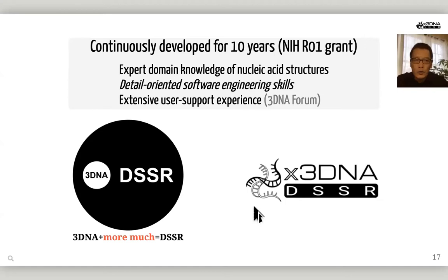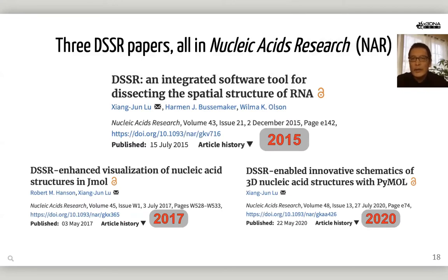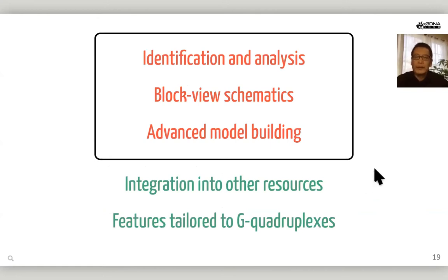The DSSR logo has X3DNA in it. I have published three DSSR papers, all in Nucleic Acids Research. The 2015 NAR paper focused on structural analysis and annotation of RNA structures. The DSSR-GEMO and DSSR-PMO integrations were published in 2017 and 2020, respectively. DSSR has three major functions: identification and analysis, block-wheel schematics, and advanced model building. It can be integrated into other resources easily and has unique features.